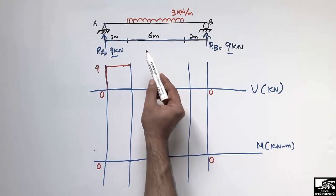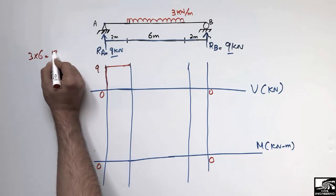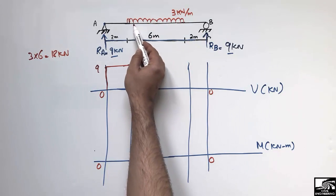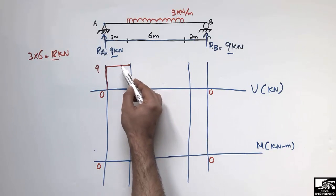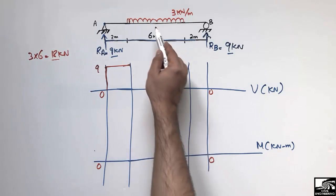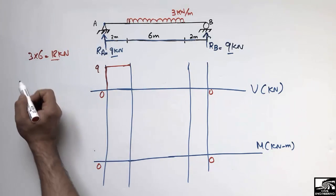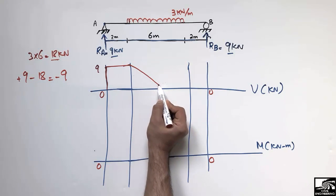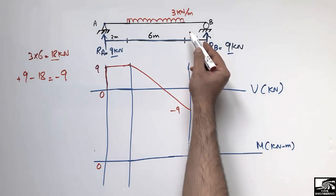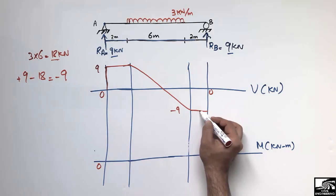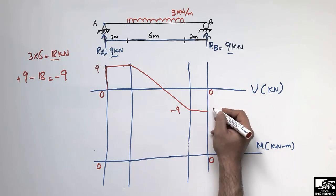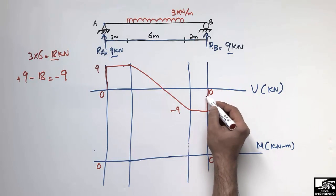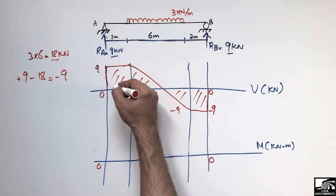The UDL of 3 kN/m over 6 m converts to a concentrated load of 18 kN acting downward. This brings the shear force from +9 down by 18, reaching −9. Since 9 − 18 = −9, the shear passes through zero at midspan and becomes −9. Over the final 2-meter span with no load, it remains −9 as a straight line, then RB = +9 kN closes the diagram back to zero, confirming the shear force diagram is correct.